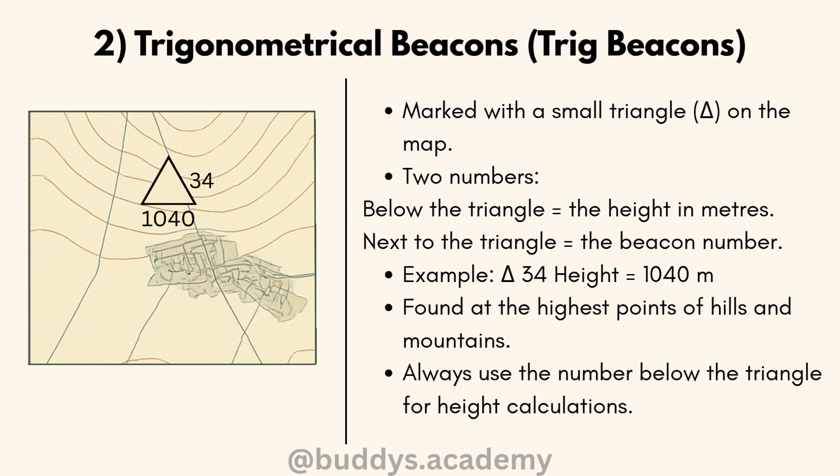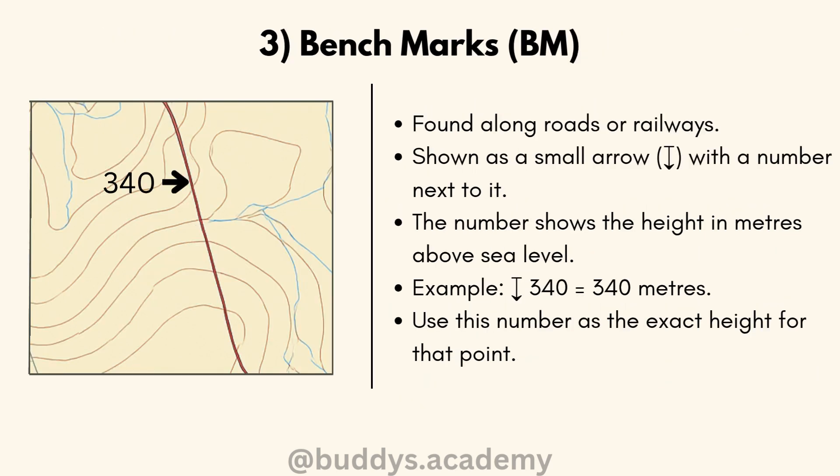Remember that your trig beacon will be found at the highest point of hills and mountains. The third way would be a benchmark, which is found along roads or railways. You will see an arrow with a number next to it, and that number is your height — in this case, 340 meters.